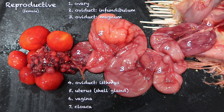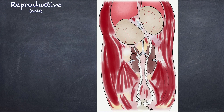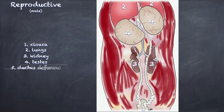For the male reproductive tract, here's an illustration with the cloaca, lungs, and kidneys as landmarks. These large structures are the testes — they generally appear large and white during the breeding season and are about half that size and more yellow in the non-breeding season. They empty into the ductus deferens, and just as the ureter empties into the cloaca, it's the ductus deferens that empties into the cloaca. Mostly flightless birds and some geese, swans, and ducks may have a phallus.